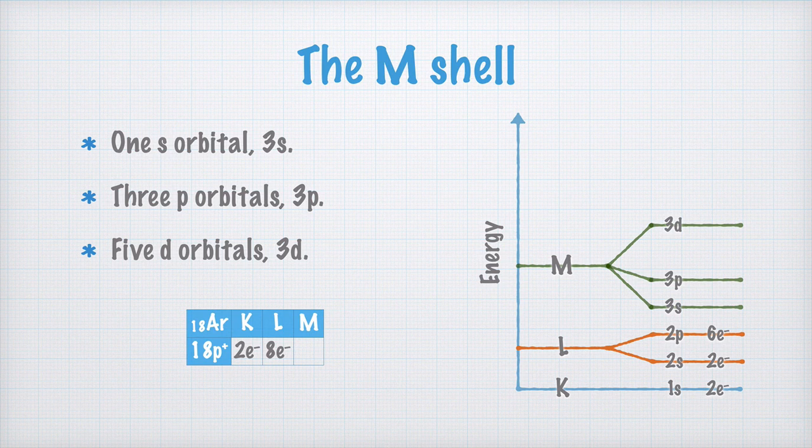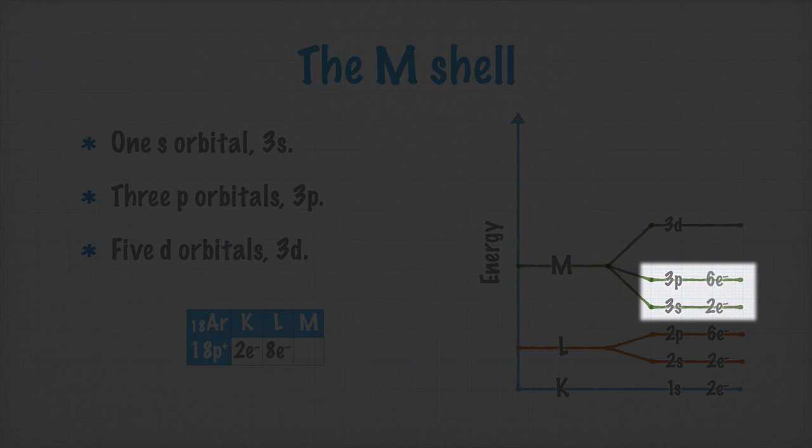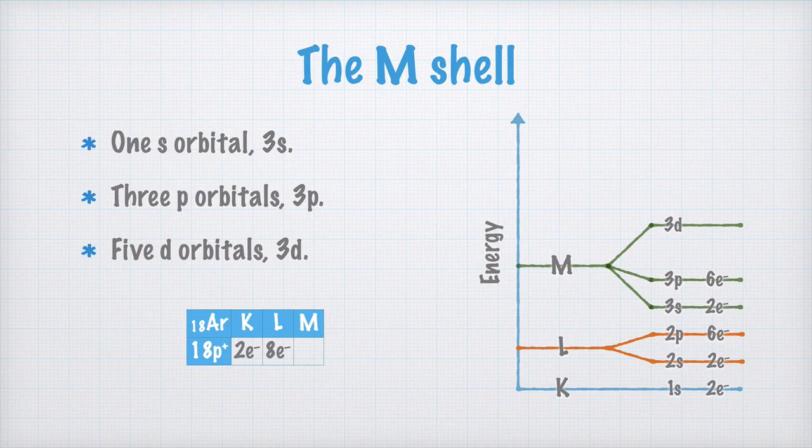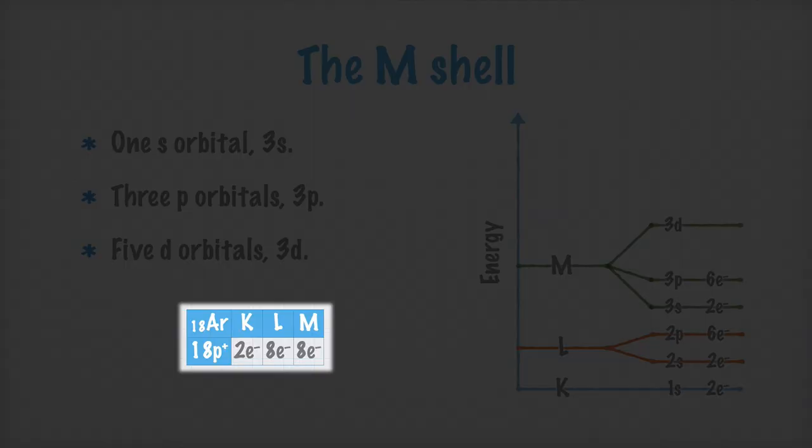There are now eight electrons left to distribute, and they of course end up in the M-shell. Two in the 3s orbital, and six in the three 3p orbitals. And, as I said, there are now eight electrons in the M-shell.